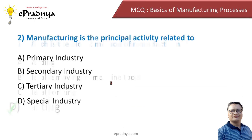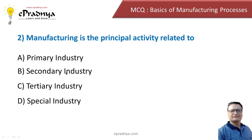Let us move to the second question. Manufacturing is the principal activity related to which type of industry? The options are primary industry, secondary industry, tertiary industry, and special industry. The correct answer is secondary industry.